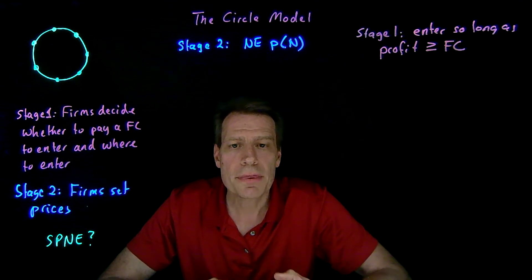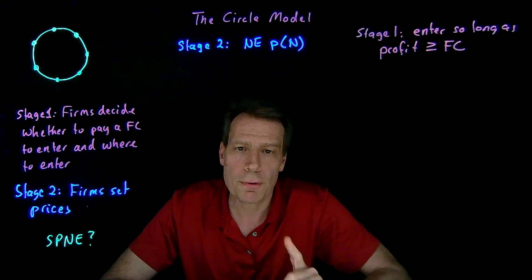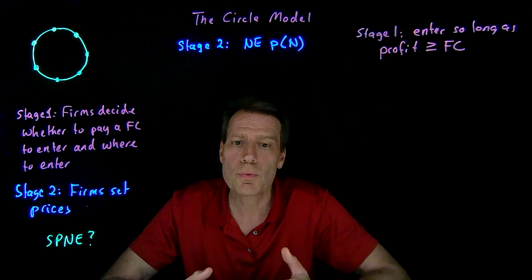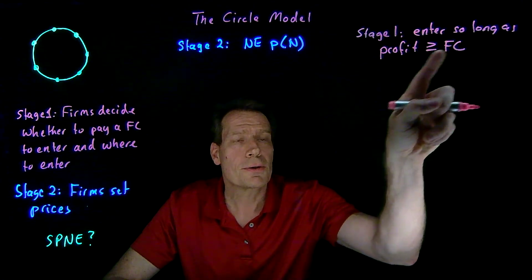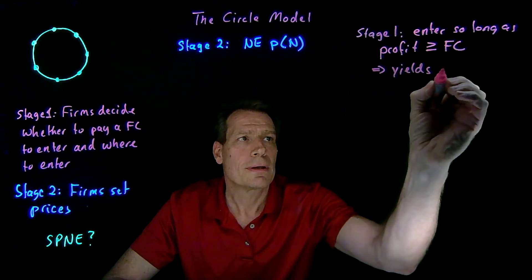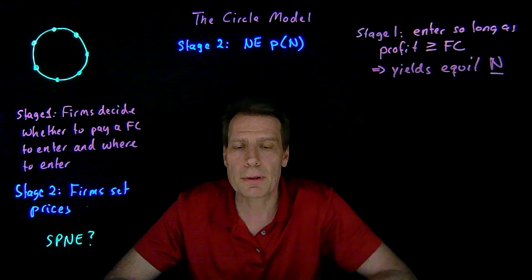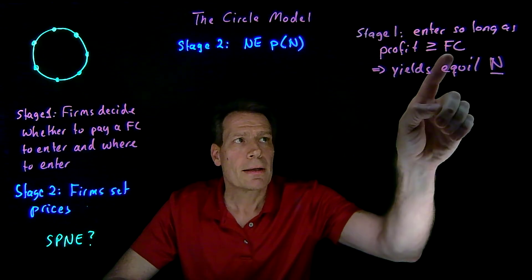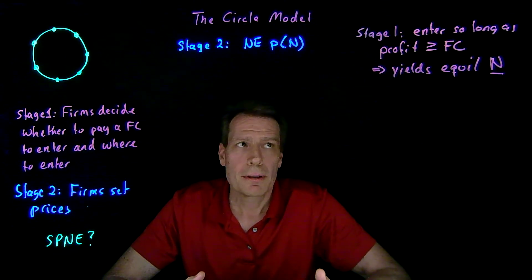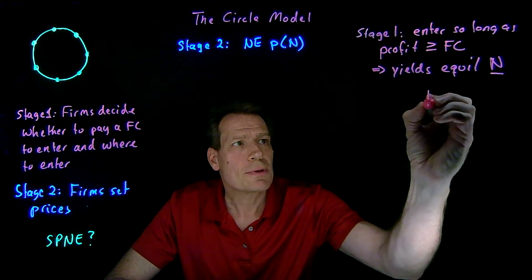In equilibrium, the number of firms that enters must be such that for those firms that entered, profit in stage two is at least as large as the fixed entry cost. But if one more firm had entered, this would no longer be true — profit would be less than the fixed entry cost, which is why no additional firms entered. This condition yields the equilibrium number of firms N. More firms will enter the lower the fixed entry cost; fewer firms will enter the higher the fixed entry cost.